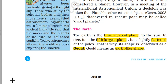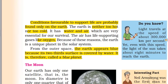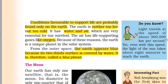Earth is the third nearest planet to the sun, and the fifth largest planet. It is slightly flattened at the poles, so its shape is not exactly circular — it is called a geoid, which basically means an Earth-like shape. The conditions favorable to support life are found only on Earth. The Earth is neither too hot nor too cold; it has water and air, which are essential for survival, including life-supporting gases like oxygen. From outer space, Earth appears blue because two-thirds of its surface is covered by water — therefore it is also known as the blue planet.